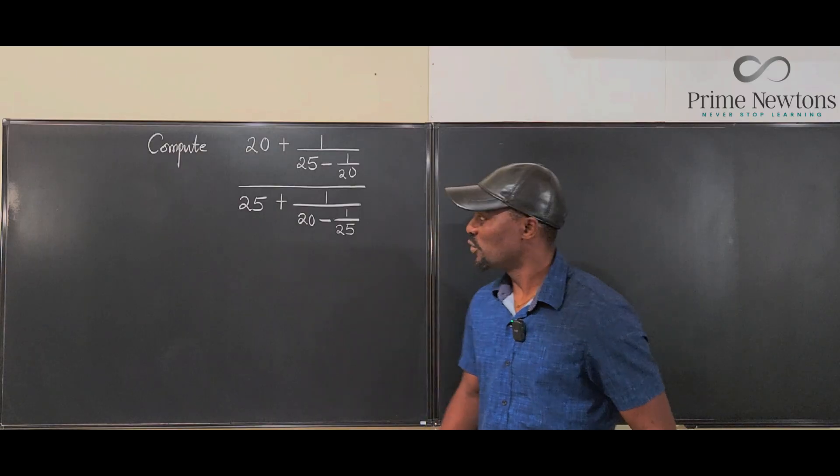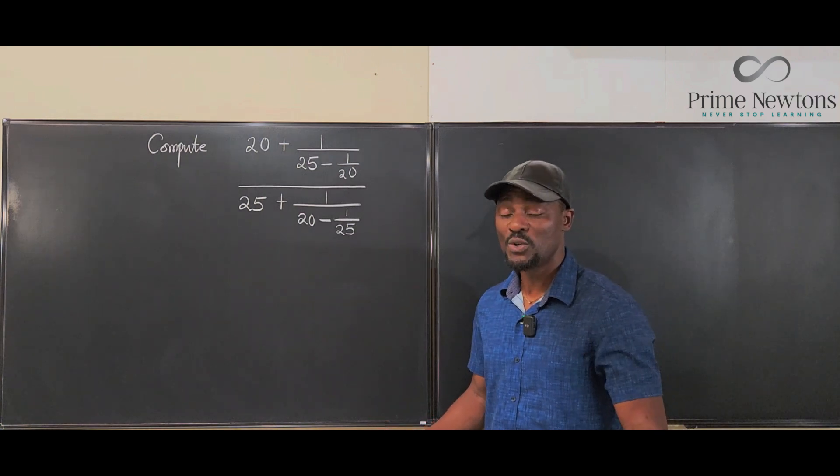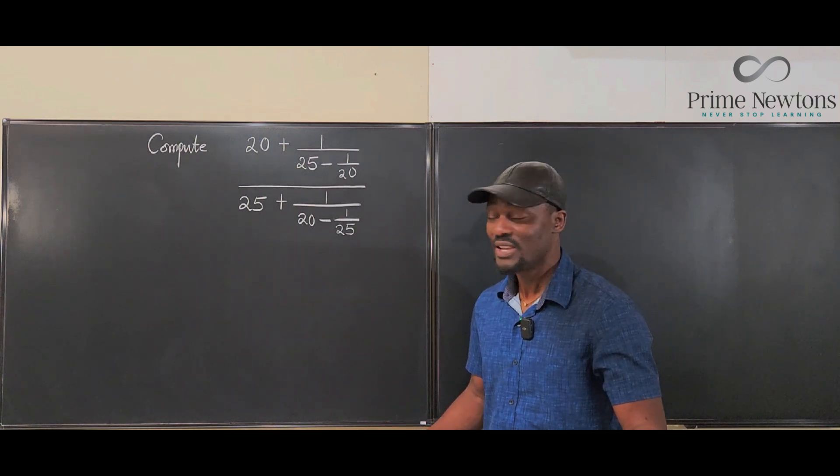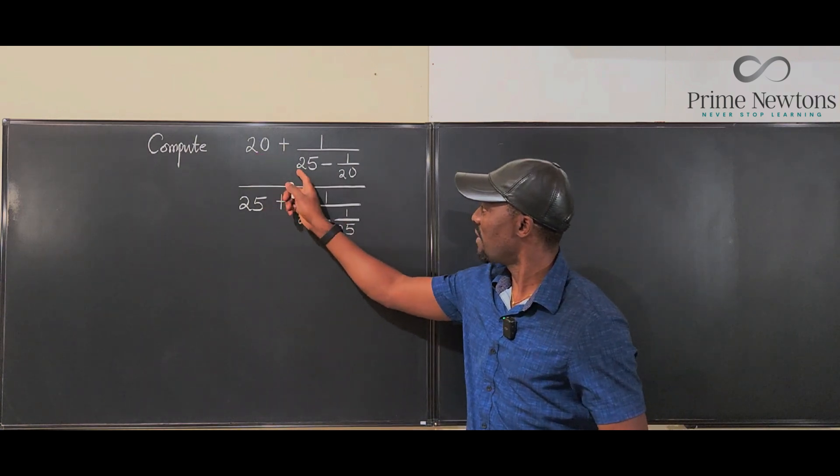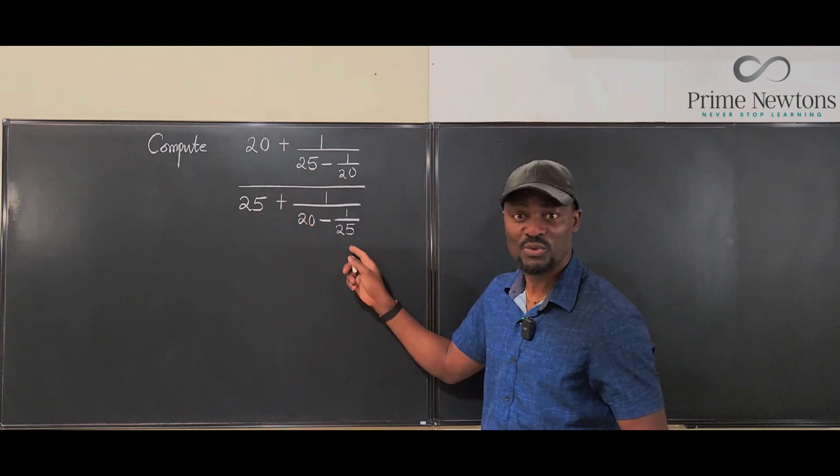So for a problem like this, you should see a pattern that there are only two numbers showing up. There is 20 and there's 25. There's 20, there's 25, there's 20, there's 25.